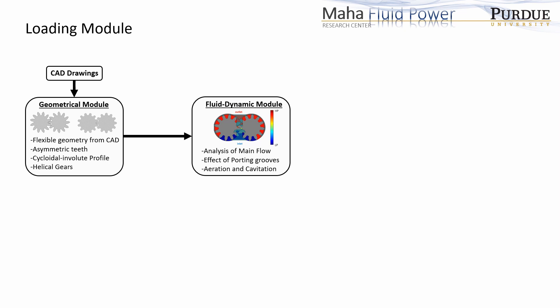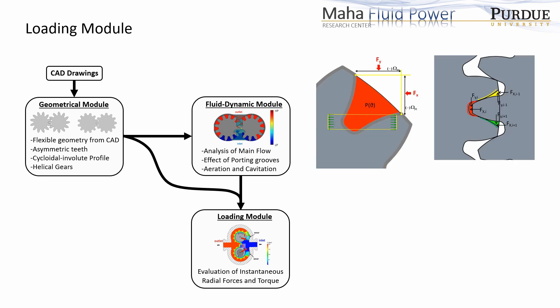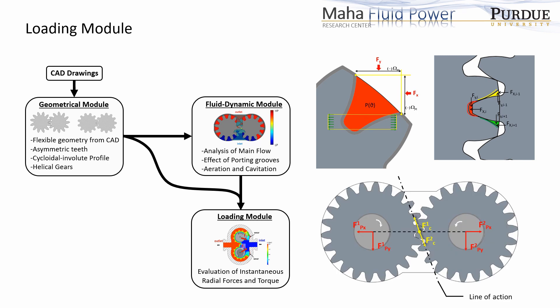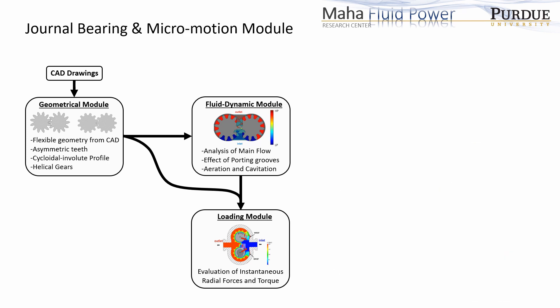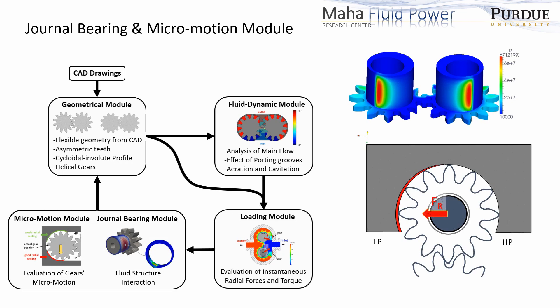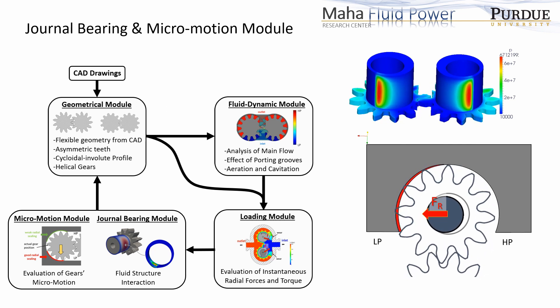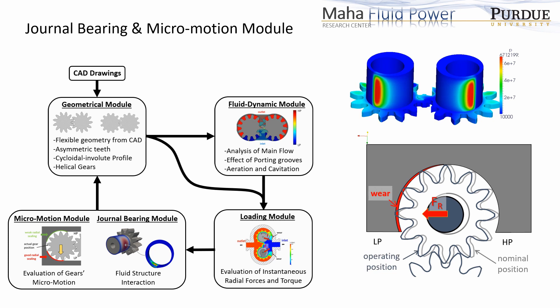The pressure information from the fluid dynamic module and geometric information from the geometrical module is used by the loading module to determine the net forces acting on the gears. Appropriate strategies are used to determine the pressure forces from the fluid domain in the meshing zone and away from it. The net force also includes the contact force acting on the gears. The force information is then used by the journal bearing module, which determines the instantaneous location of gears with respect to the casing — helping predict casing wear due to gears' micromotion. The instantaneous position of the gear is then used to update the geometric information.